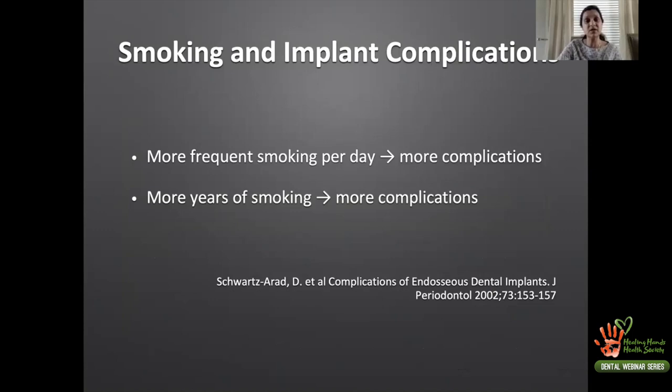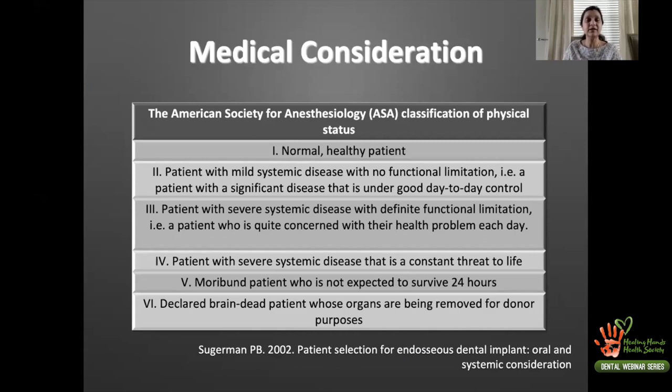What Schwartz et al. informed us through their publication is that the frequency of smoking — how many cigarettes a person smokes — affects complications, and also for how long an individual has been smoking predicts how many complications patients may present with. Secondly, when assessing patients for implant placement, ASA classification plays a very important role. ASA classification was given to us by Sugarman in 2002 and is widely used to predict the feasibility of a particular treatment.